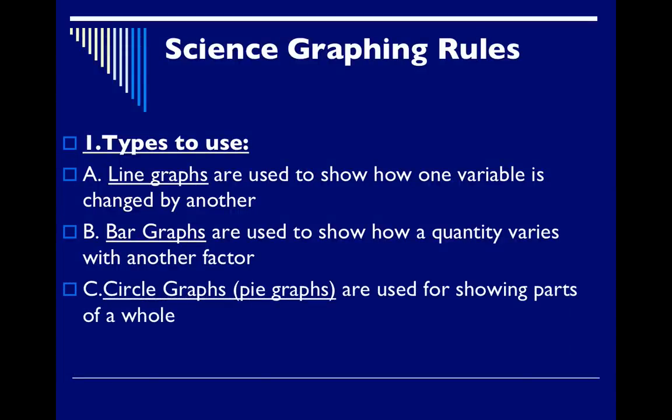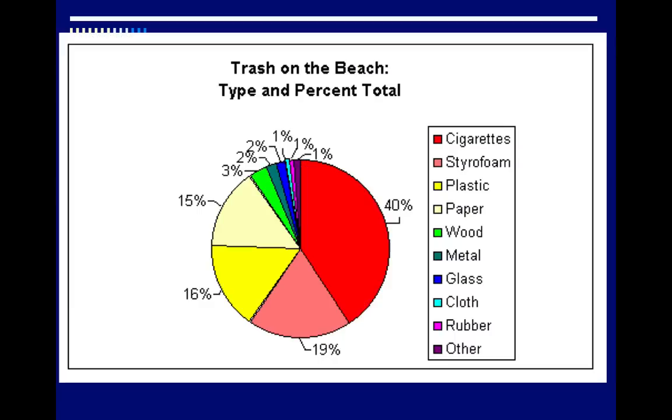The third type of graph we could possibly use is a circle graph or more commonly known as a pie graph. And it's used for showing parts of a whole. So let's say you went out to go clean up a beach and at the end of your beach cleaning session you went ahead and you went through all the trash that you found.